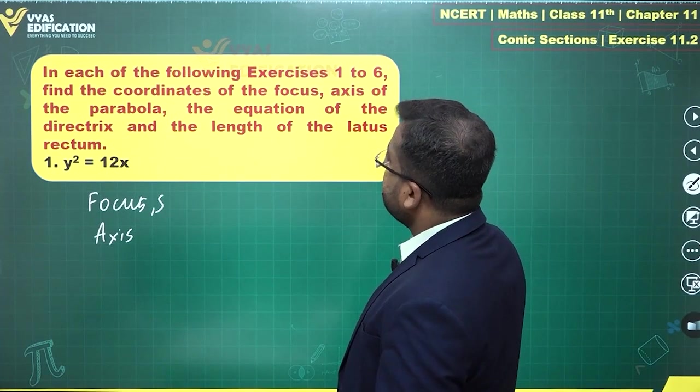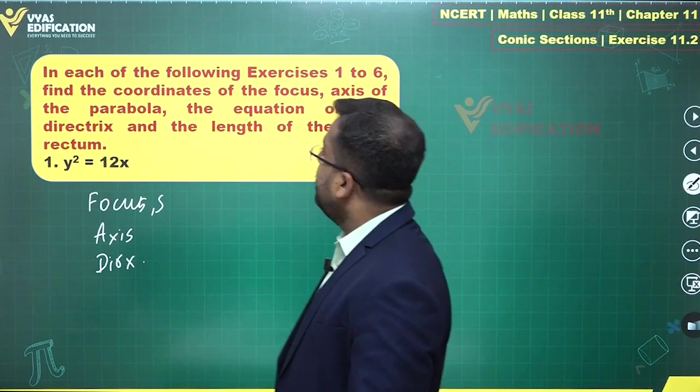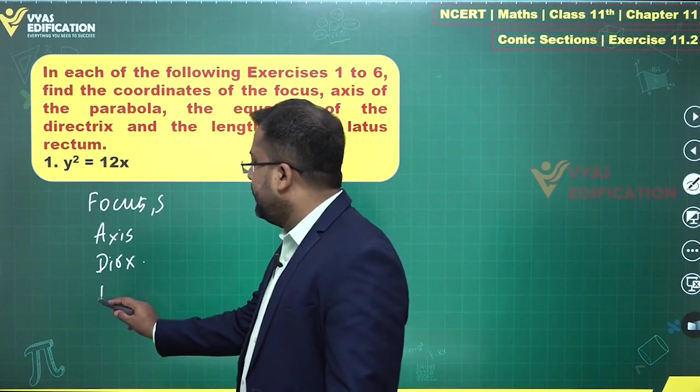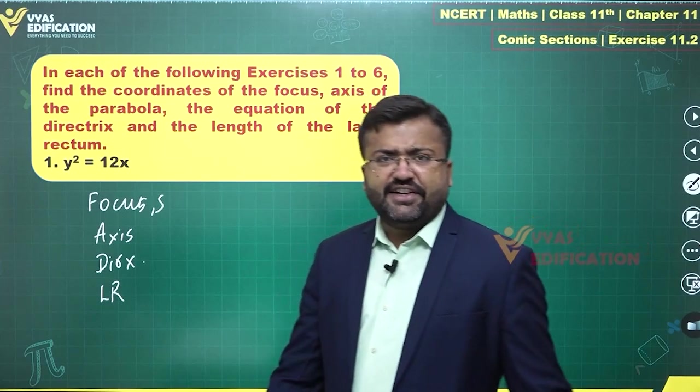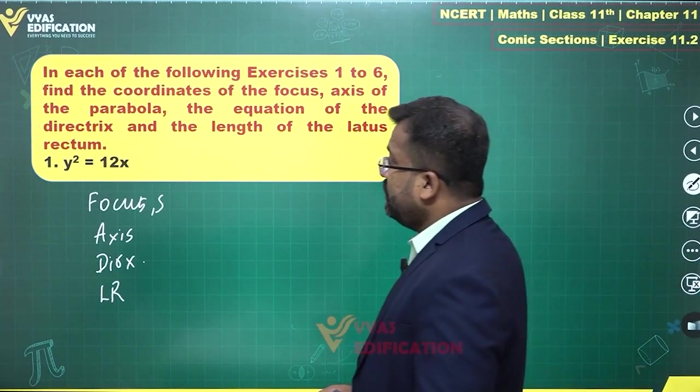Find the coordinates of focus, axis of the parabola, equation of directrix. So, let's see directrix. And length of latus rectum, length of latus rectum denoted by LR, let's say. So, these are the four things that we need to find. This is Y² = 12x.